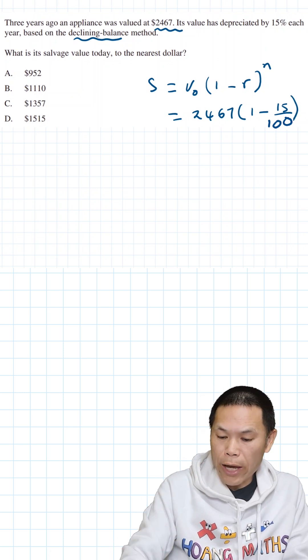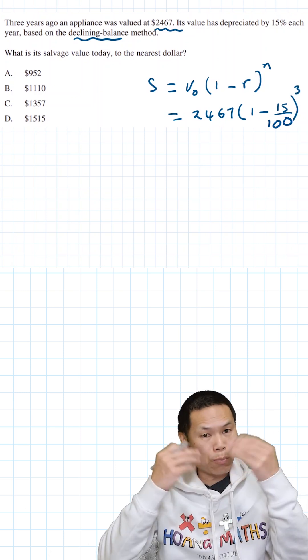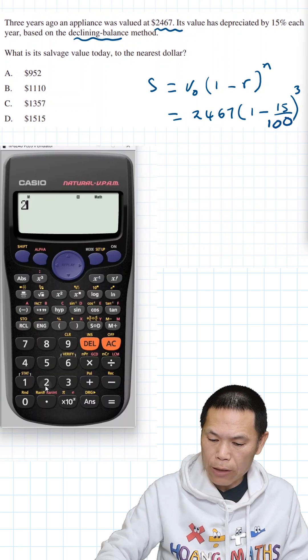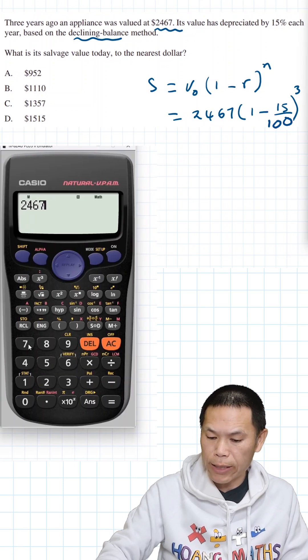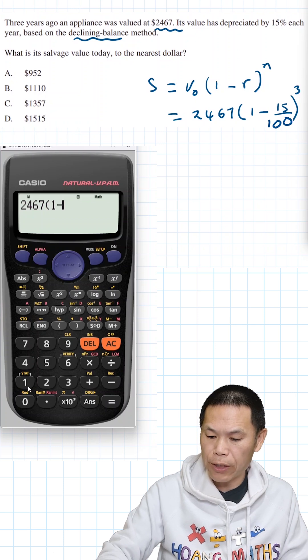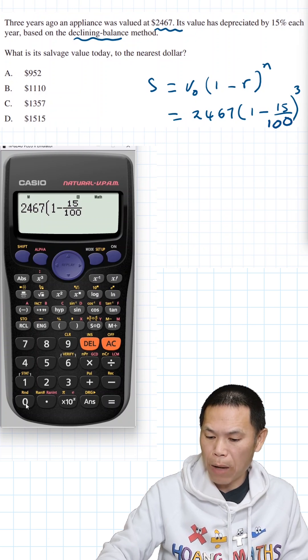And we know that n is three years. So now what I do, I just put it on a calculator: 2,467 brackets one minus 15 over 100, and then of course power three.